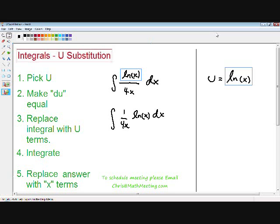Now I rewrote the function for you as 1 over 4x multiplied by the natural log of x dx, because this is going to make it a lot easier for us when we take our du.